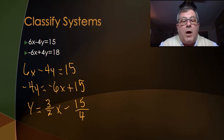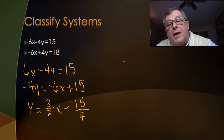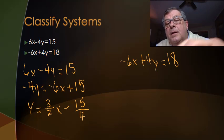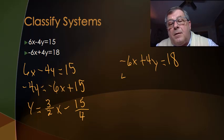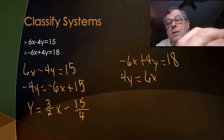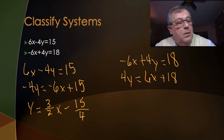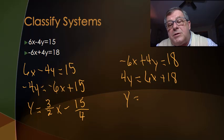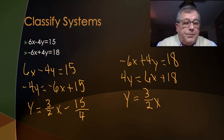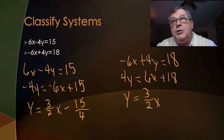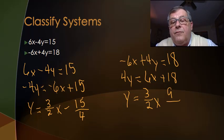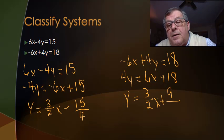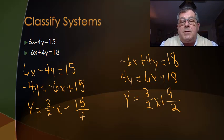Now let's tackle the second equation: negative 6x plus 4y equals 18. This time I'm going to add 6x to both sides, giving me 4y equals 6x plus 18. Now dividing both sides by 4: 6 over 4 reduces to 3 halves x, and 18 over 4 reduces — both divisible by 2 — giving 9 halves. So y equals three-halves x plus 9 halves. That puts both equations into slope-intercept form.